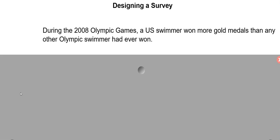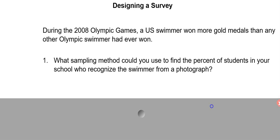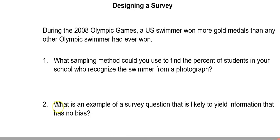So last thing, let's just design a quick survey. During the 2008 Olympic Games, a U.S. swimmer, you might know who it is, won more gold medals than any other swimmer had ever won. What sampling method could you use to find the percent of students in your school who recognize the swimmer from a photograph? Well, I mean, you could use a lot of different ones. You might randomly select. So you could put everyone's name in a hat, randomly select some of the students to ask them. You could do systematic. These are both good ways of doing things. So you could use every 10th person that walks into the school, you ask them, show them a picture and ask them a question. So there's a number of good ways. Convenience sampling or volunteering is not a great way of doing it.